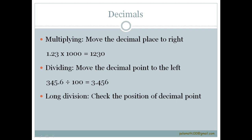Coming to decimals, multiplying by 1000, move the decimal place right by three places. For example, 1.23 times 1000 should give us 1230.